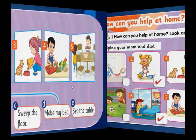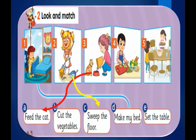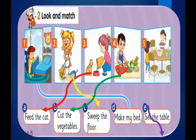Look and match: the first picture — make my bed. Number two — sweep the floor. Number three — feed the cat. Number four — cut the vegetables. Number five — set the table.